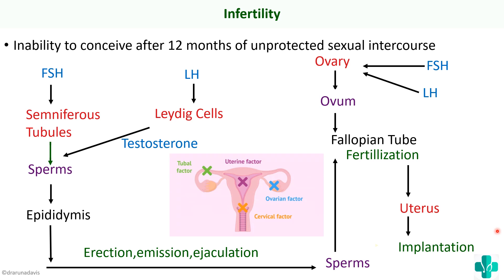This flowchart shows how normal fertilization occurs, but if there is any problem anywhere in this flowchart, the baby will not be formed. The causes of female infertility can be divided based on location: ovarian factors, tubal factors, uterine factors, and cervical factors. We will see each one by one.